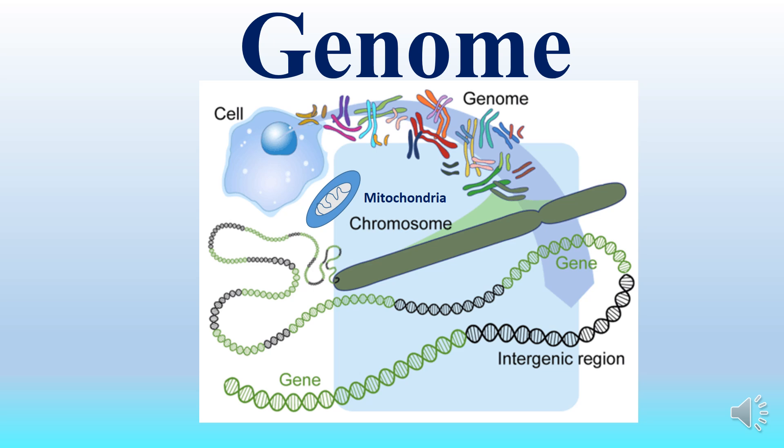The genome is actually the entire set of DNA instructions found in a cell. In humans, the genome consists of 23 pairs of chromosomes located in the nucleus, as well as a small chromosome in the cell's mitochondria. A genome contains all the information needed for an individual to develop and function.